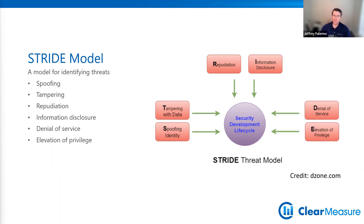Repudiation — that's a weird word — but it's a user being able to deny performing an action, saying 'I didn't do that.' A common challenge is digital signatures and being able to prove that a particular person made an approval or signed a document or executed a transaction. What if that person is able to do something but then later come back and say 'I didn't actually do that'? So that's repudiation.